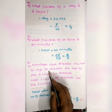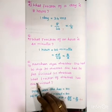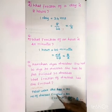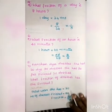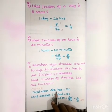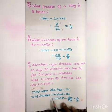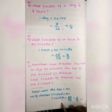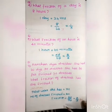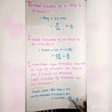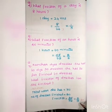What fraction of the dresses has she finished? Total number of dresses is 30. Number of dresses finished is 20. So we write the fraction as 20 by 30. We cancel to get 2 by 3. This is the answer.